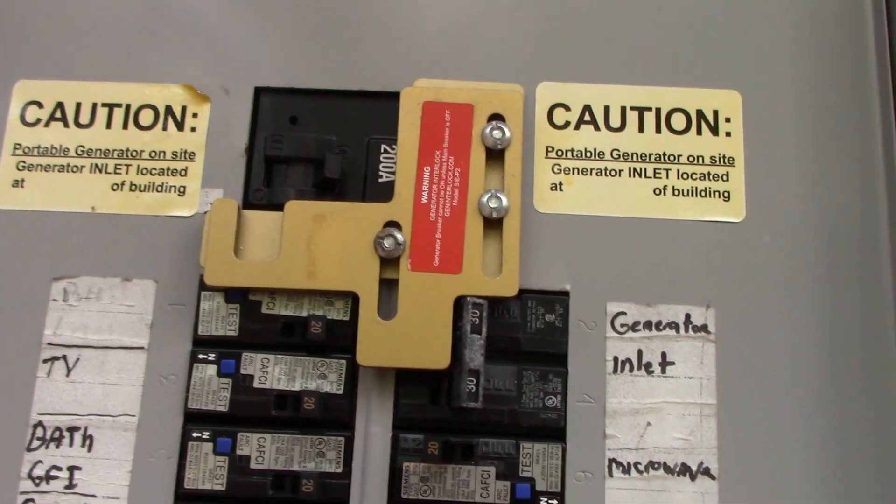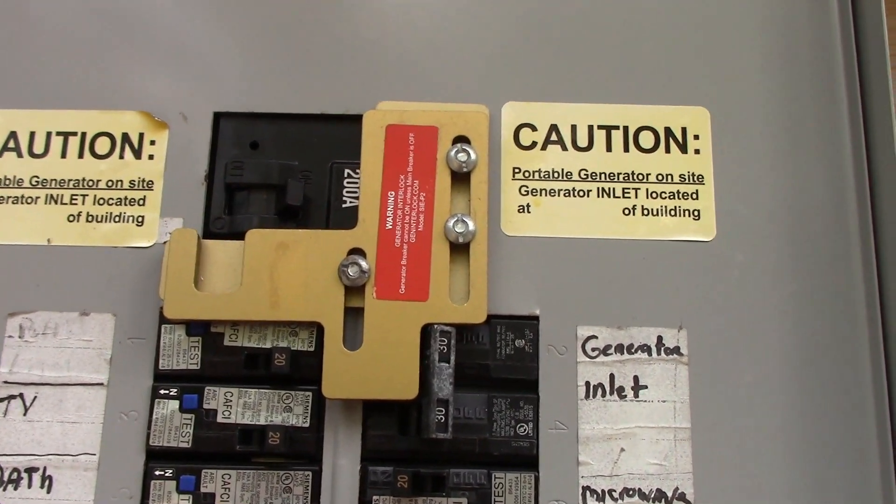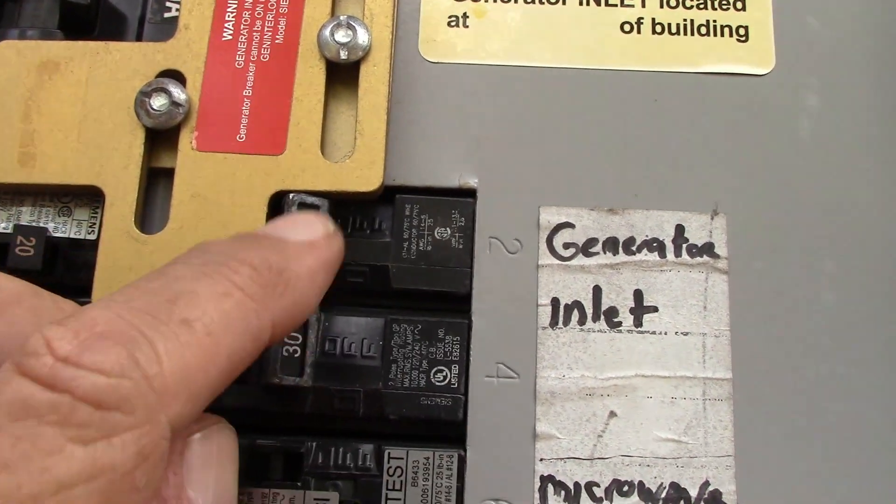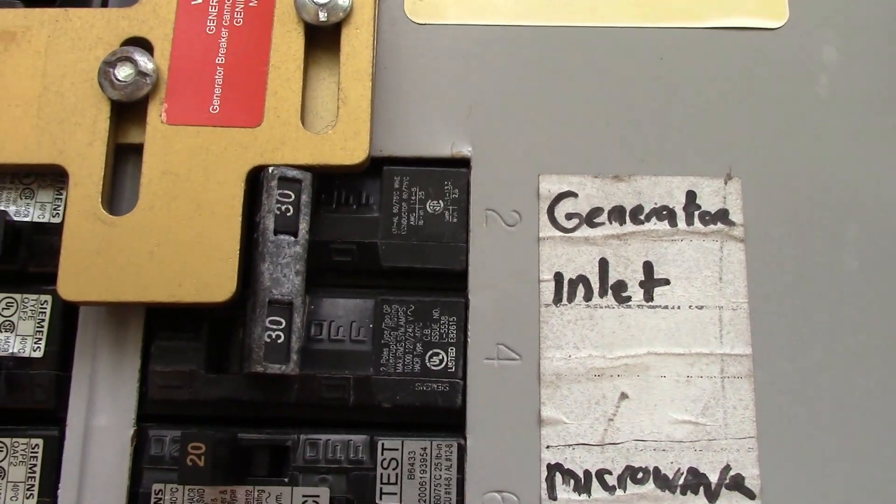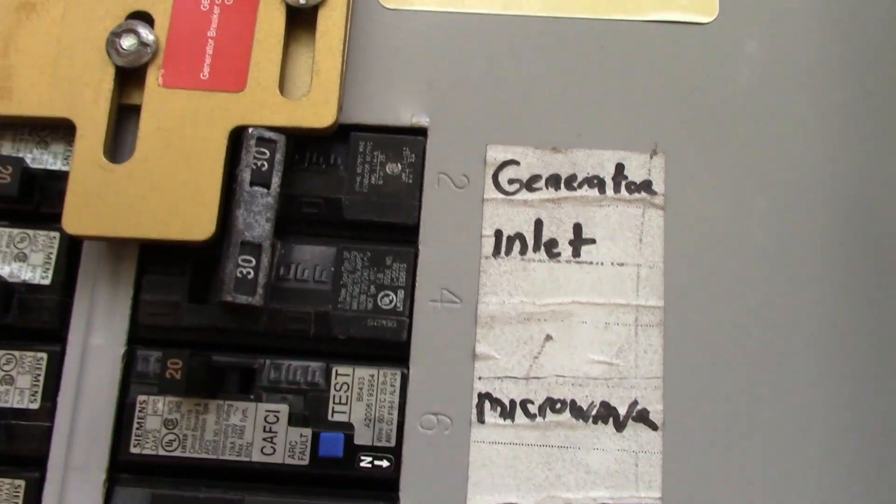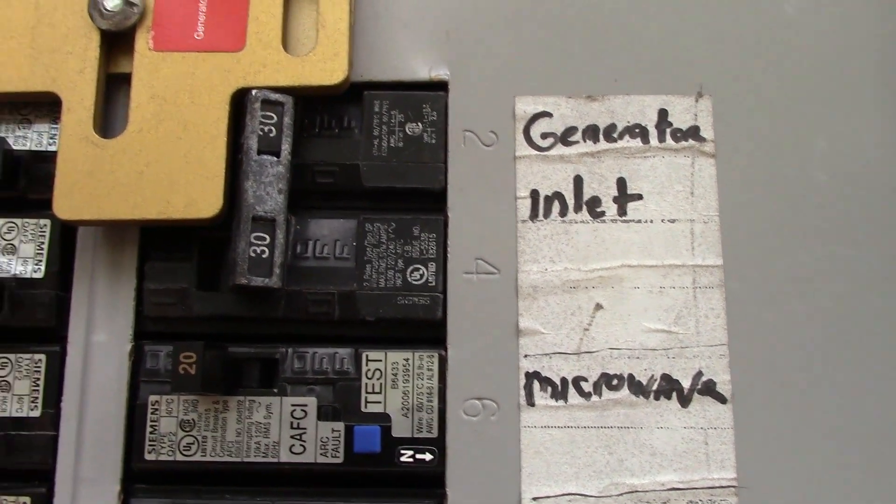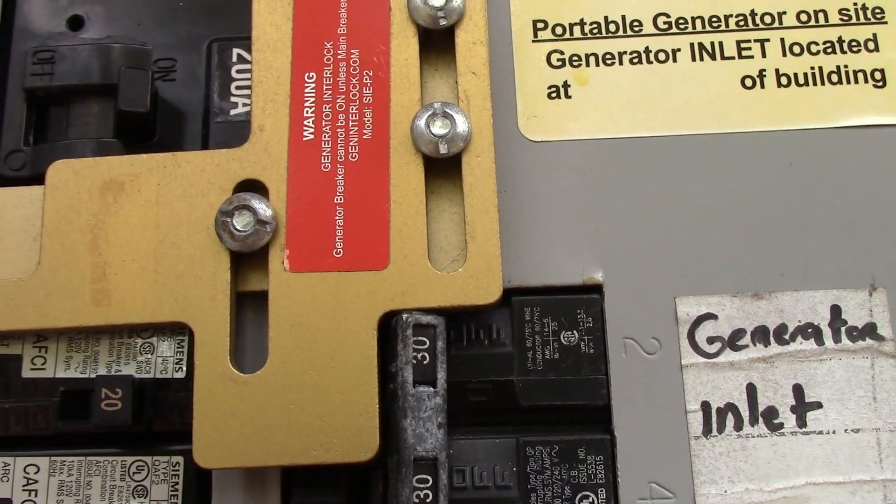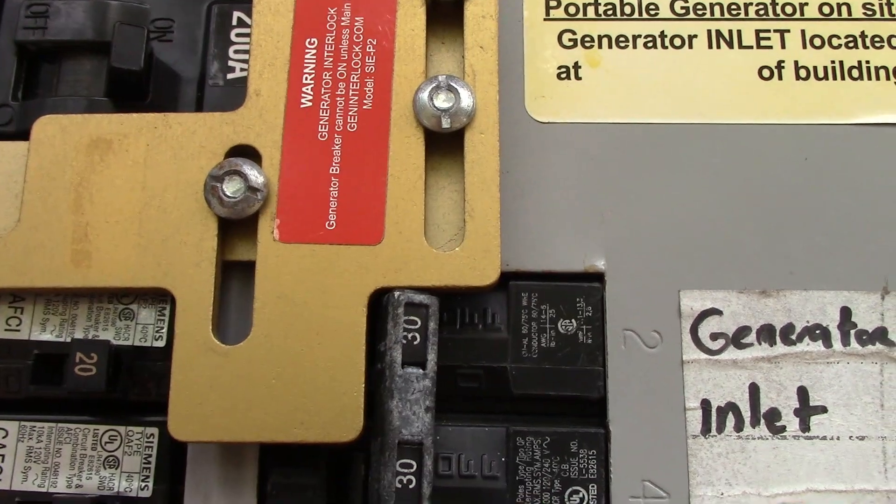That goes up to the interlock kit. As you see, this is the generator breaker here - it's also connected to the solar inverter. Basically, if I were to flip this breaker on, I would have power coming into this panel here. But that can't happen when you have the main breaker on. At the same time, if the power is off from a storm, then you'd be back feeding the line. So you have an interlock kit.